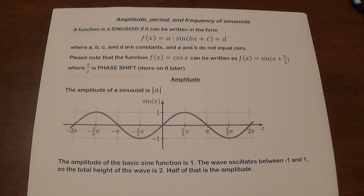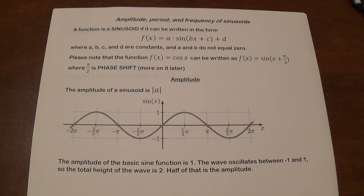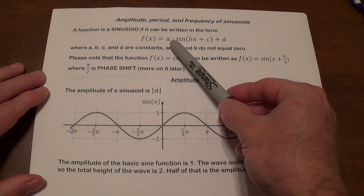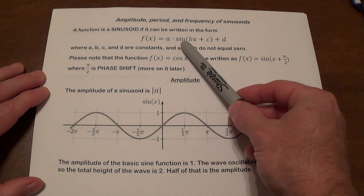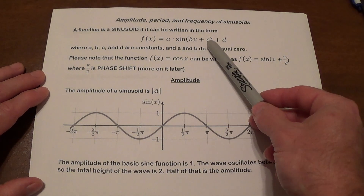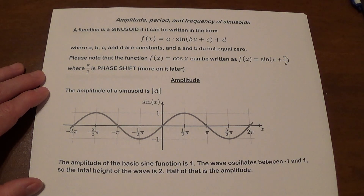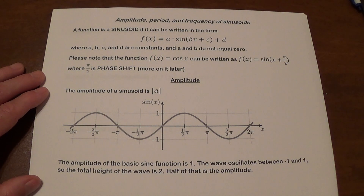In this video we're going to discuss the amplitude, period, and frequency of sinusoids. A graph is a sinusoid if you can write it in the form a times sine of bx plus c plus d, where a, b, c, and d are constants and a and b cannot be zero.